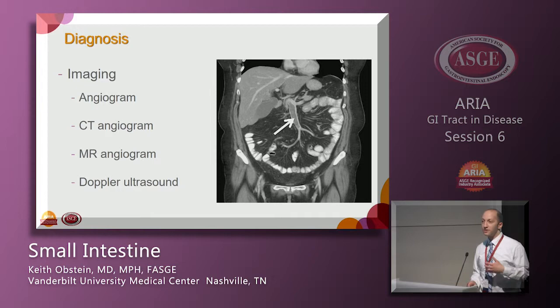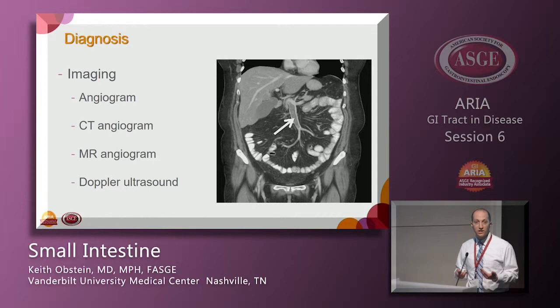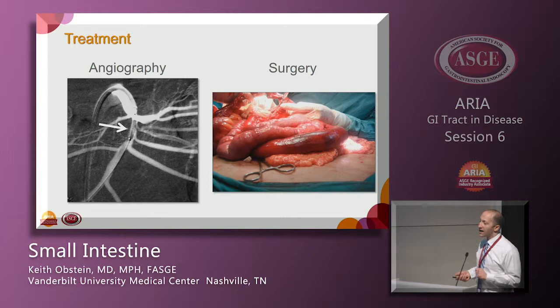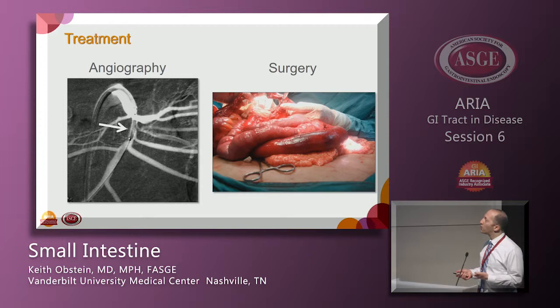Diagnosis includes CT angiography, MR angiography, or Doppler ultrasound to assess flow patterns. CT can reveal a large clot in the SMA. Treatment involves angiography with balloon thrombectomy or thrombolytic agents, or surgery for clot removal with vascular grafting and rerouting of blood flow.